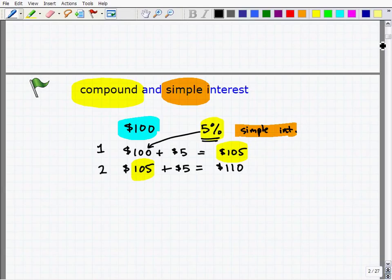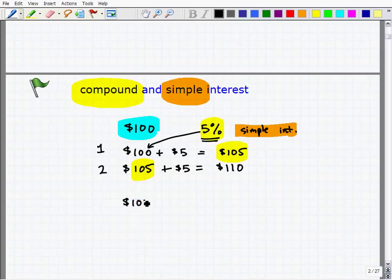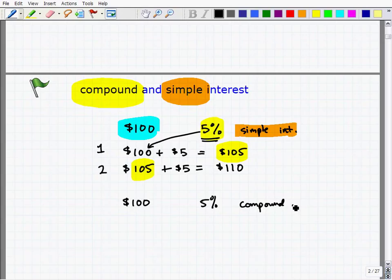And there's a much better way of investing, and that is called compound interest. Let's see how that works. Compound interest, let's suppose the same bank says, you can invest your $100 with this, but 5% compounded annually. That would be the interest rate, so let's see how that works.